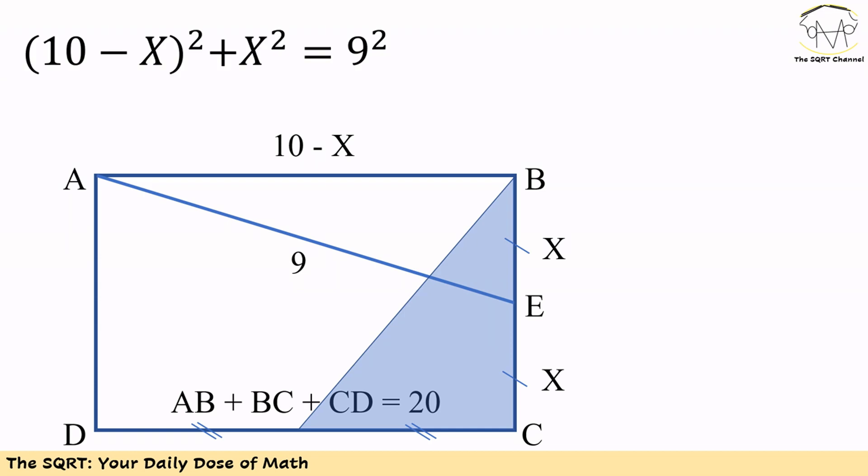We know AB plus X is equal to 10, so we write AB as 10 minus X. And then in triangle ABE, we know 10 minus X squared plus X squared is equal to 9 squared.